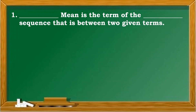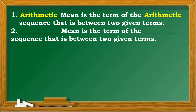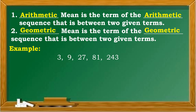Remember that arithmetic mean is the term of the arithmetic sequence that is between two given terms. Obviously, when we say geometric mean, it is the term of the geometric sequence that is between two given terms. For example, in the sequence 3, 9, 27, 81, and 243 — the numbers between 3 and 243 are 9, 27, and 81. They are called the geometric means between 3 and 243.